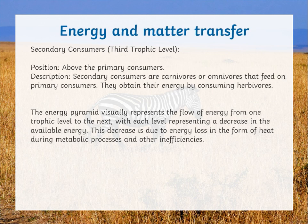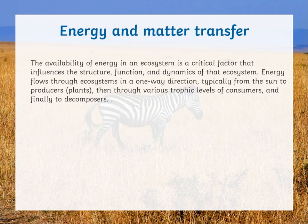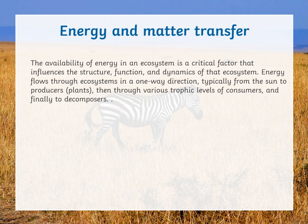The energy pyramid visually represents the flow of energy from one trophic level to the next, with each level representing a decrease in available energy. This decrease is due to energy loss in the form of heat during metabolic processes. Energy flows through ecosystems in one direction — typically from the sun to the producers, then through various trophic levels of consumers, and finally to decomposers, as food chains and food webs start with producers and end with decomposers.